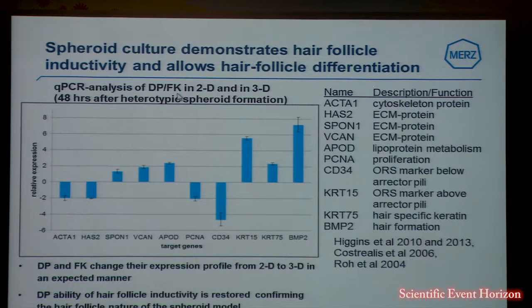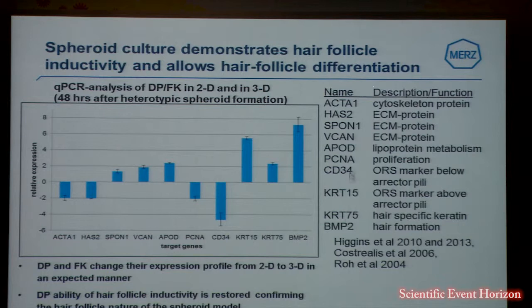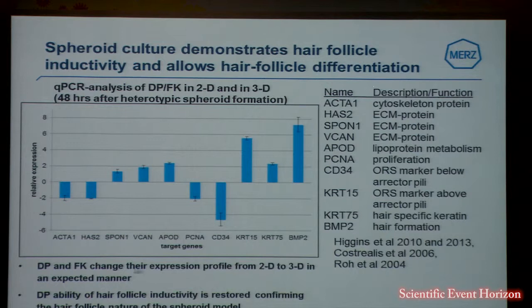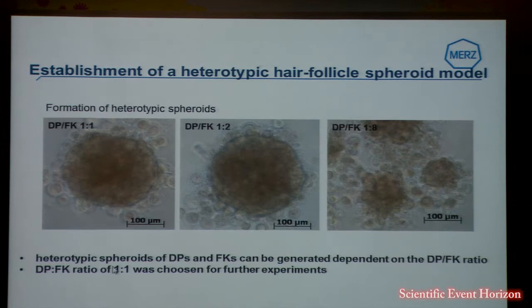It is well known from the literature that DP cells change their expression profile and lose their key inductive properties when cultured in 2D. But after 3D cultivation in a spheroid culture system, they could again show their properties to induce. On the right side here, you can see different genes known to change their expression from 2D to 3D. We performed QPCR analysis and could show that from 2D to 3D, the expression change of these genes is in an expected manner, confirming the hair follicle nature of the spheroid.